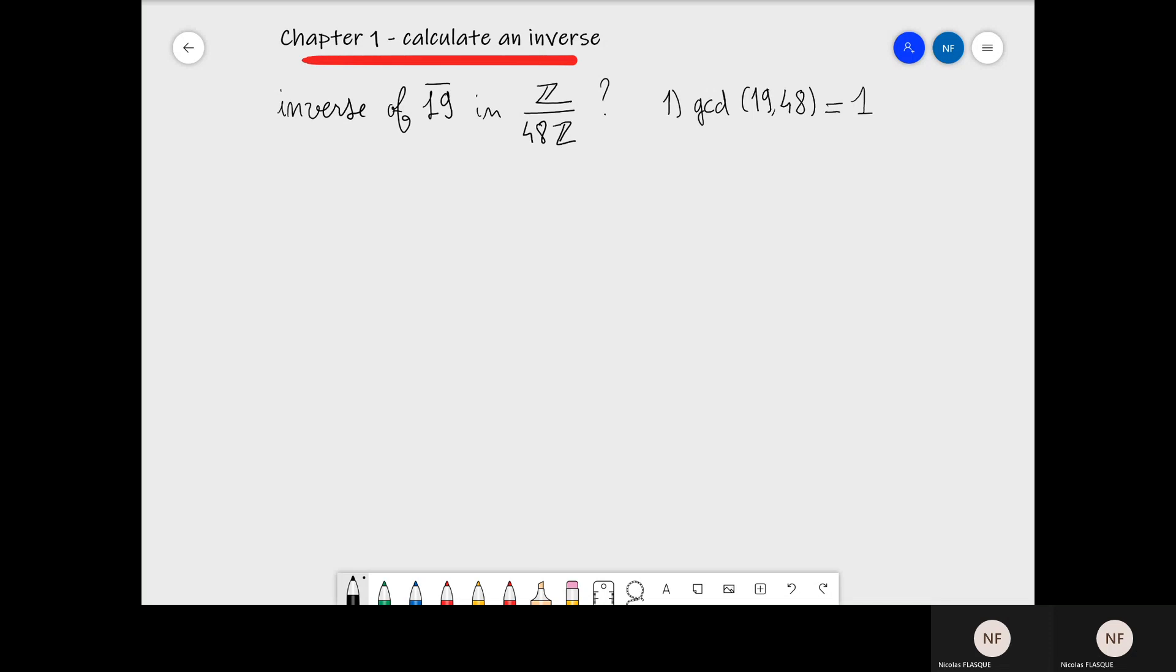In order to do this calculation, we use the extended Euclidean algorithm with the U, V, R, and Q columns. We will have to be careful about how we initialize the U and V columns with respect to the values of 19 and 48.